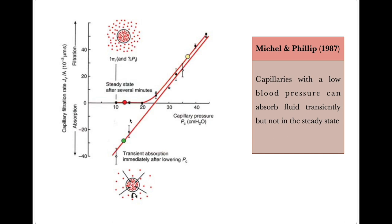In 1987, Michel and Philippe found that capillaries with low blood pressure can absorb fluid transiently but not in the steady state. They observed that when capillary hydrostatic pressure increases, the filtration rate also increases linearly with capillary pressure. But when capillary pressure decreases and becomes less than the interstitial oncotic pressure, there is a transient period of reabsorption. However, that reabsorption never occurs in a steady state — contrary to the traditional Starling filtration-absorption model.